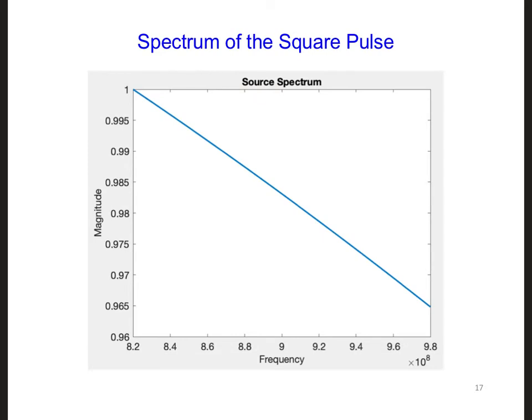Here is the magnitude of the spectrum for the square pulse shown on the previous slide. First, is this even correct?